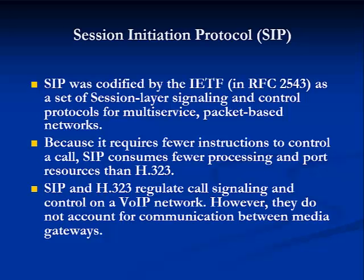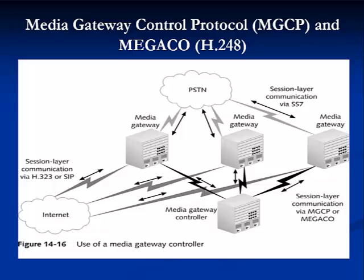VOIP networks typically use either the H.323 or Session Initiation Protocol, SIP, for their signaling and control protocols. H.323 is actually a set of standards specified for several functions on a multi-service network. Because it is older and more sophisticated, it is more common than SIP. However, SIP is regarded as potentially more efficient and scalable than H.323. On networks with multiple media gateways, a media gateway controller offloads call control functions from the gateways, allowing them to concentrate on handling payload information translation. Media gateway controllers and media gateways communicate through the Media Gateway Control Protocol, or MGCP, or a similar protocol known as MEGACO.